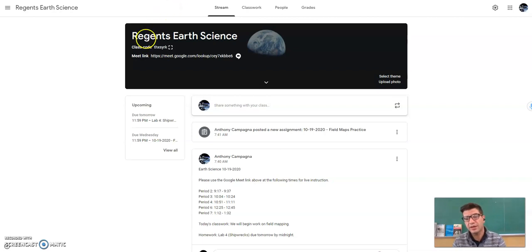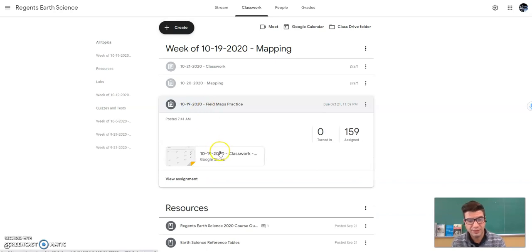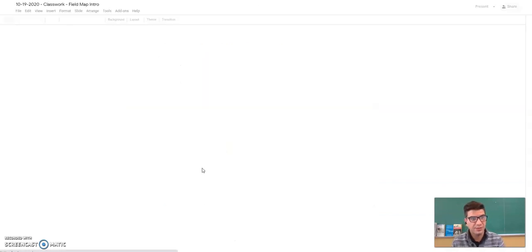All right, hi everyone. Today is October 19, 2020. We're going to go over field mapping. If you go to week of 10, 19, 2020, you'll see a document called 10, 19, 2020 field map practice. You're going to select that document and load it open.